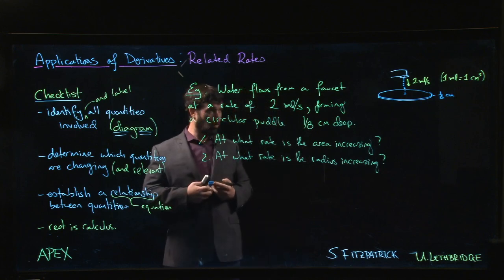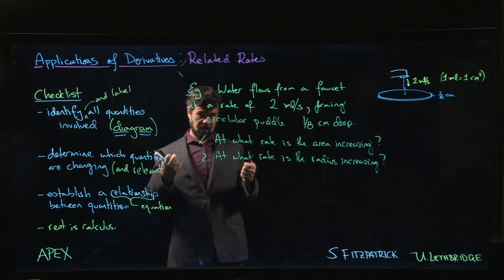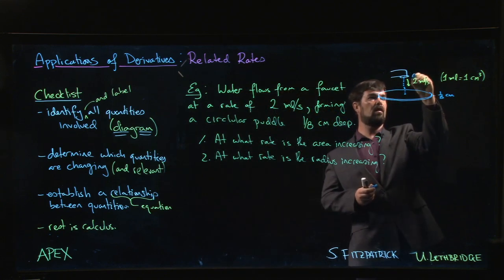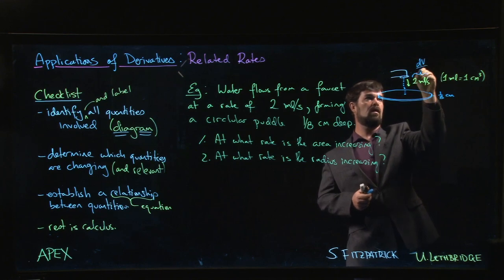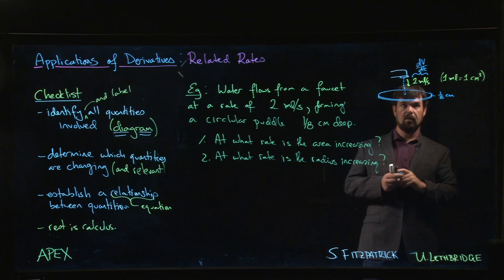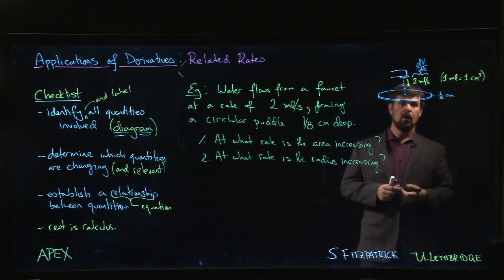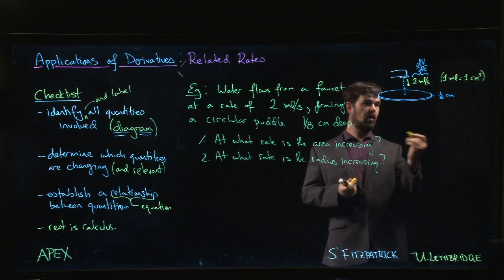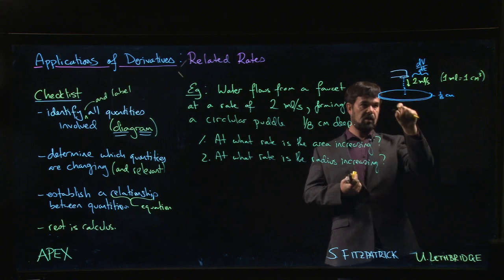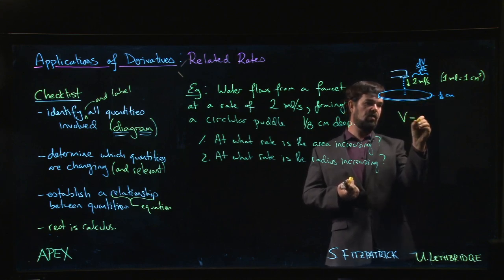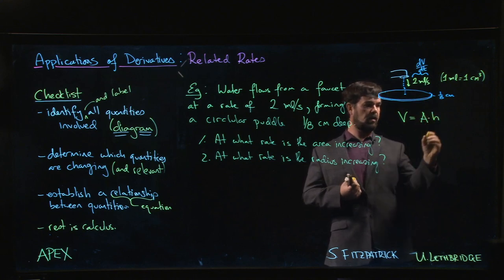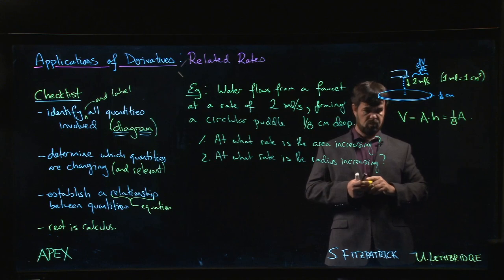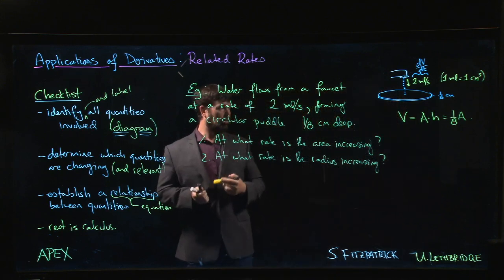When you're told that water is coming at a rate of two milliliters per second, what's changing? Milliliters measure volume, so volume is changing. This two milliliters per second is dV/dt, the rate at which the volume is changing with respect to time. Do we have a relationship between area and volume? We do, for something that has constant thickness like this. The volume is simply the area times the height.